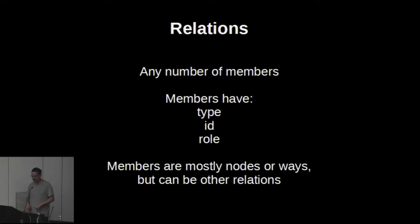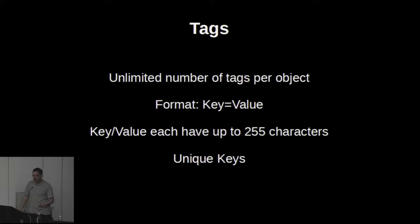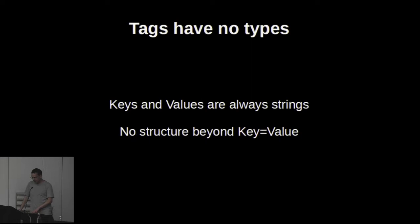Relations can have any type and any number of members; members have a type, an ID, and a role. It's always a bit weird that we have a role and not a key-value pair like we have for tags. Members are mostly nodes and ways, but relations can refer to other relations, which makes things really, really complicated. Then we have tags — unlimited number per object, format key-value with 255 characters, keys are unique. Tags have no types — they are always strings — and there is no structure in the tag beyond key equals value.